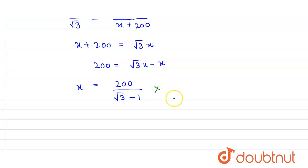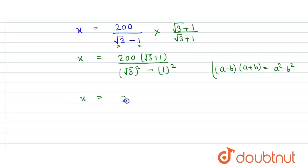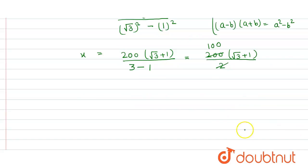We multiply numerator and denominator by (√3 + 1)/(√3 + 1). So x = 200(√3 + 1) divided by (√3 − 1)(√3 + 1). Using the algebraic identity (A − B)(A + B) = A² − B², we get √3² − 1² = 3 − 1 = 2. So x = 200(√3 + 1)/2. The 2 cancels, giving us x = 100(√3 + 1).